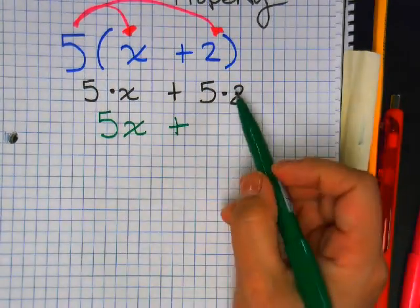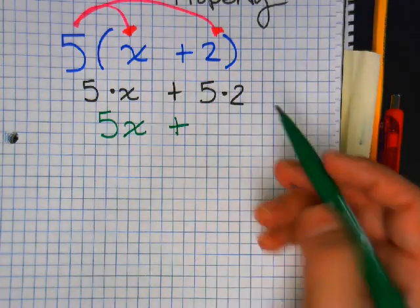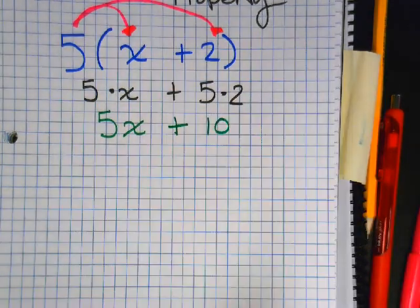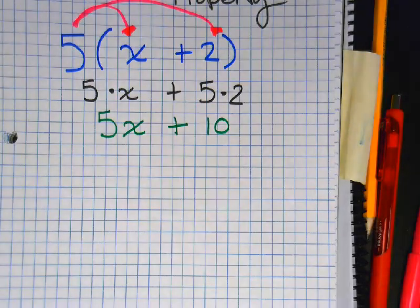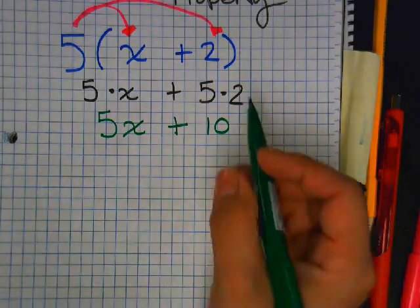So everybody gets candy. What is five times X? Five X. Squish it together. When they're squished together, it means multiplication. Five times two? Ten. Now can I put those two numbers together? No, you cannot. This is your answer.